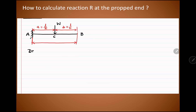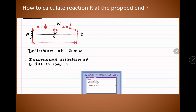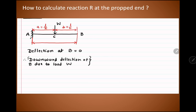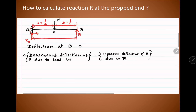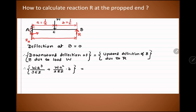Drawing the same diagram again: the downward deflection of B due to load W must equal the upward deflection caused by reaction R at point B. So we equate: WA³/(3EI) + WA²/(2EI) × B = RL³/(3EI), and now substitute the values A = L/2 and B = L/2.